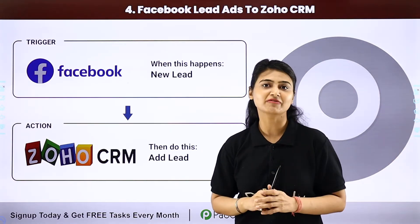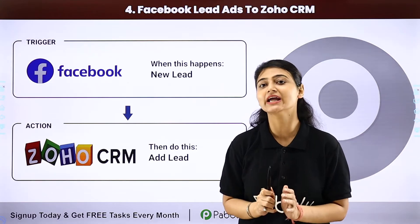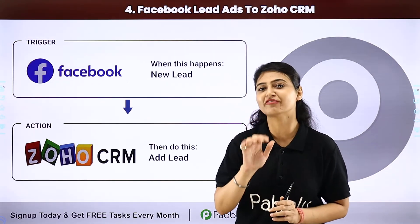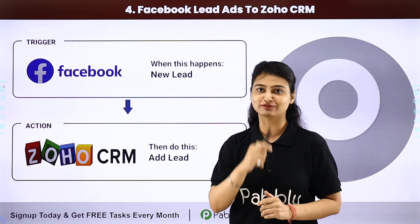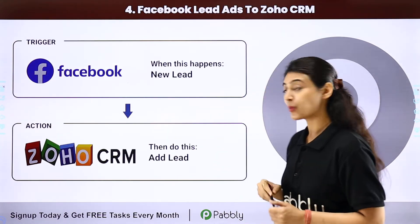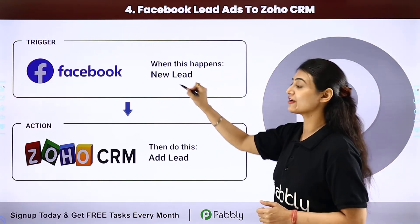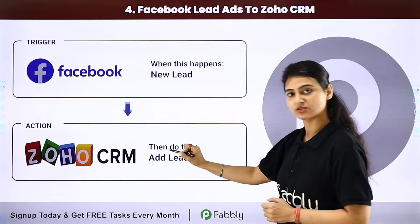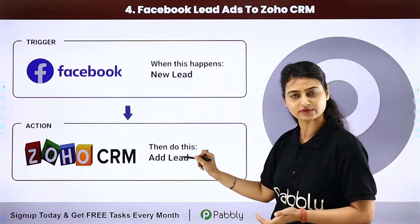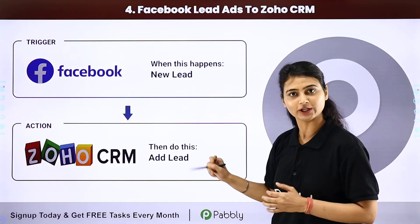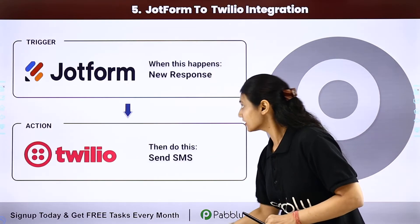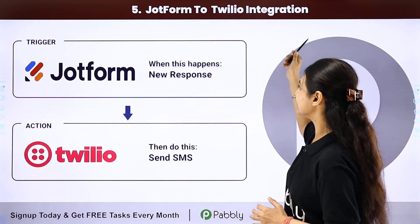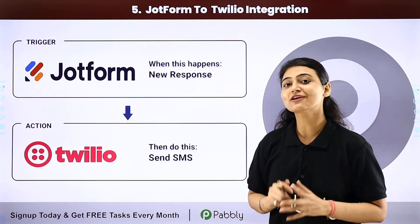Number four is Facebook Lead Ads to Zoho CRM. Leads are nine times more likely to convert when businesses follow up with them within five minutes. Whenever a new lead is generated via Facebook, it will automatically be added as a new lead in Zoho CRM, alerting your salesperson so they can quickly contact your leads.